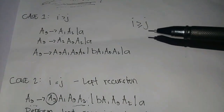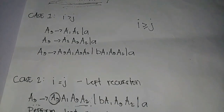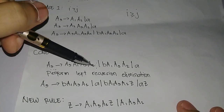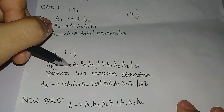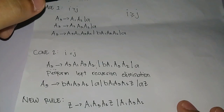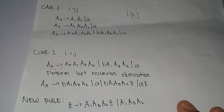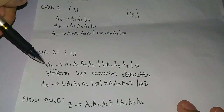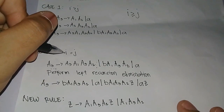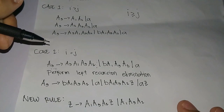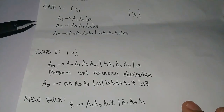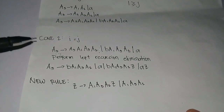We have two cases. Case 1 is when I is greater than J — we resolve it by replacing A1 with another value. Since the condition where I equals J means it should never be I greater than or equal to J, we will use Case 2, which is left recursion elimination. As you can see, this production's leading variable and the production variable are equal, so we will use left recursion.